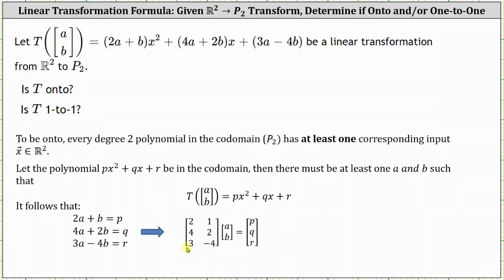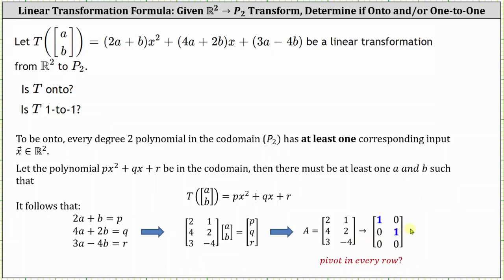But if we stop here for a second: since we have three rows and two columns, we cannot have a pivot in every row, and therefore the transformation is not going to be onto. Showing matrix A in reduced row echelon form confirms this — notice we have pivots in row one and row two, but not row three. The transformation is not onto, meaning not every degree-two polynomial in the codomain has at least one corresponding input vector x in R2.